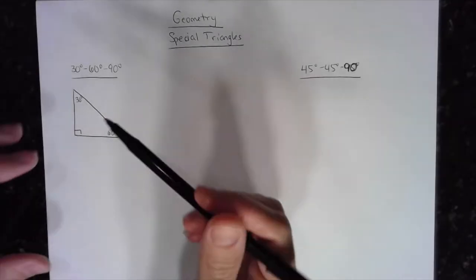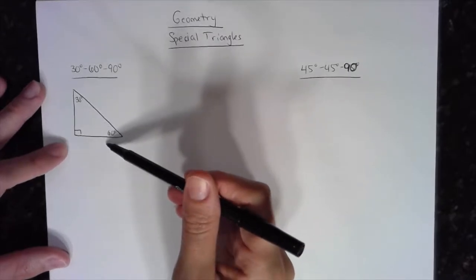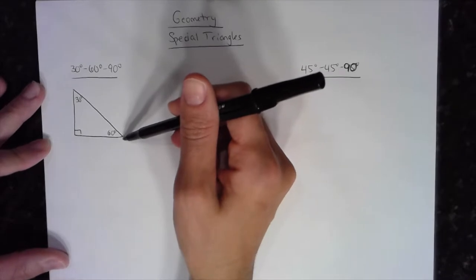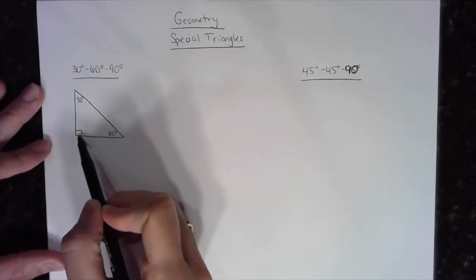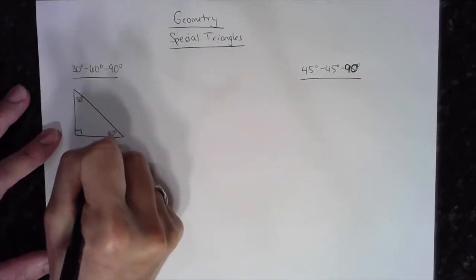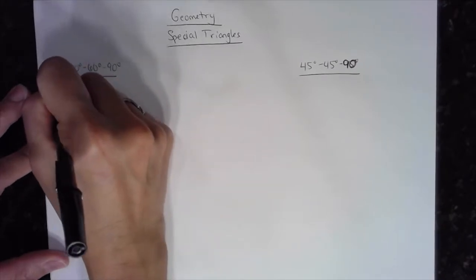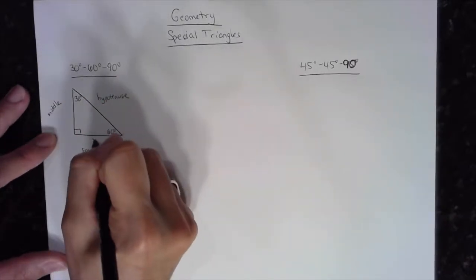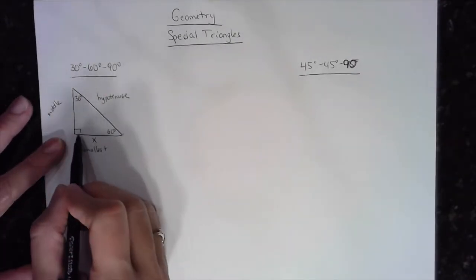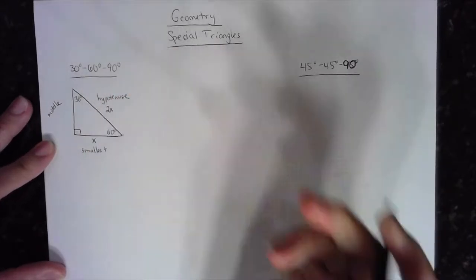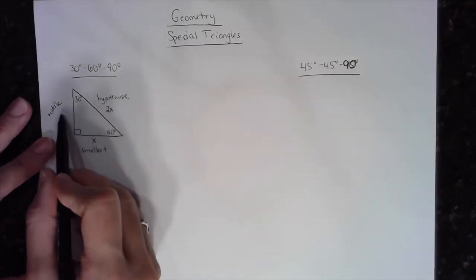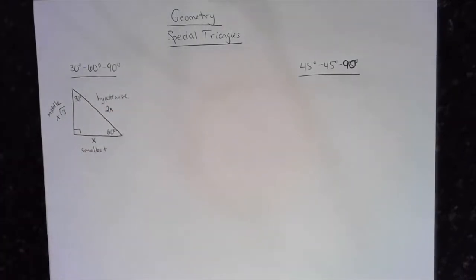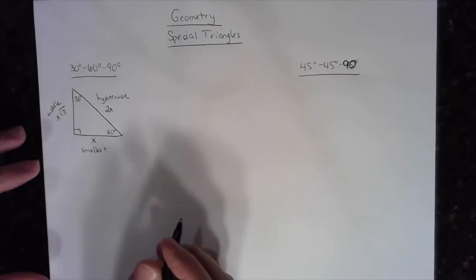The lengths of the sides of a triangle correspond to the angles: the smallest angle is opposite the smallest side, the middle angle is opposite the middle length, and the hypotenuse is always the largest side because it's opposite the largest angle. If I call the smallest side x, in a 30-60-90 right triangle the hypotenuse is 2x, and the middle side — opposite the 60-degree angle — is x times the square root of 3.